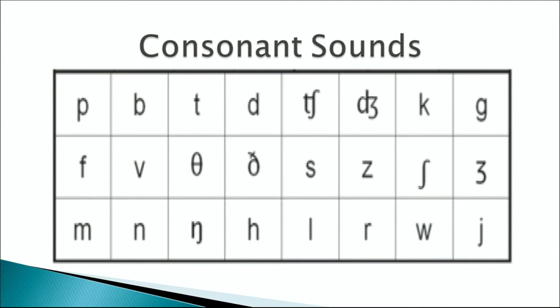The next sound is k, as in kite, cake, and chemist. We use the IPA symbol for k to avoid confusion because the k sound can be represented by ch as in chemist, or c as in cake. In phonetics, we use just the k symbol to avoid this confusion.